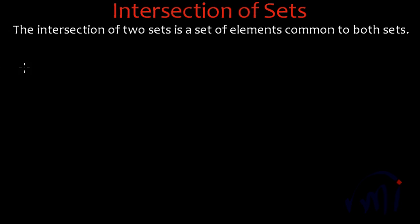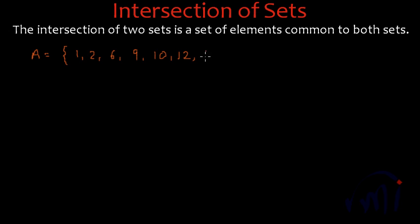Suppose if I have a set A whose elements are 1, 2, 6, 9, 10, 12 and 15, and I have a set B which has multiples of 3 but less than 30.